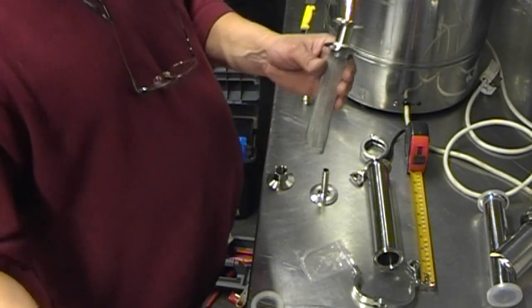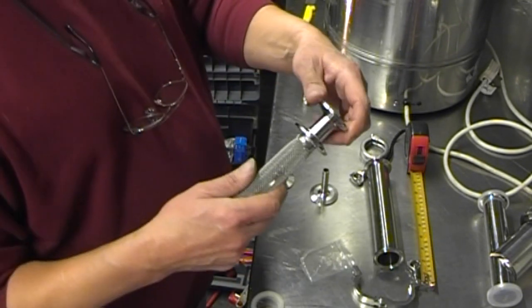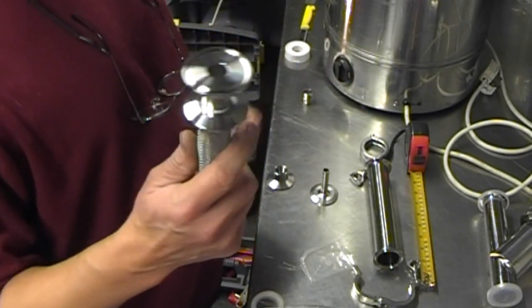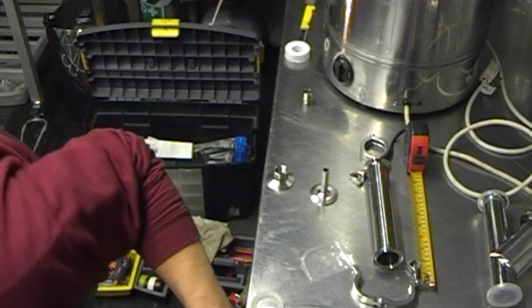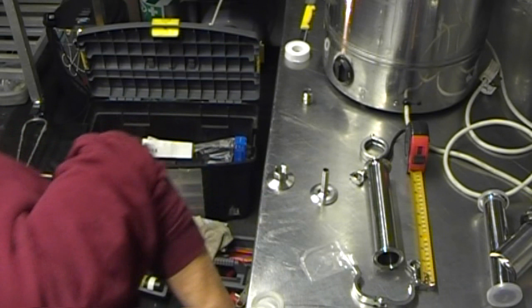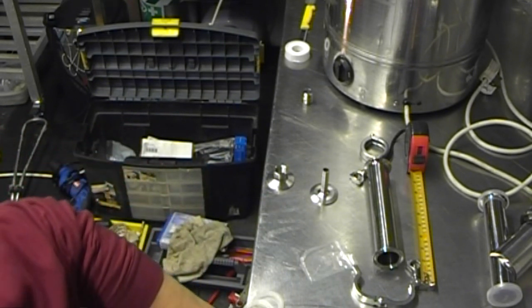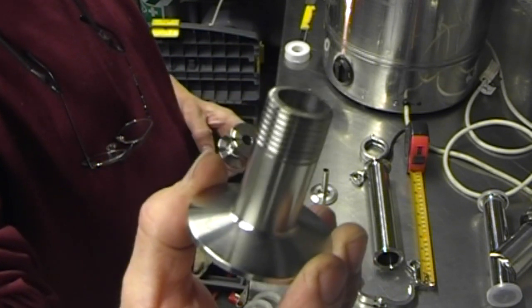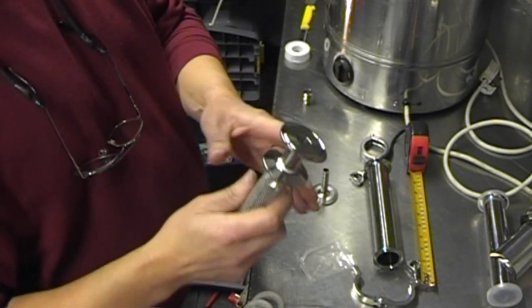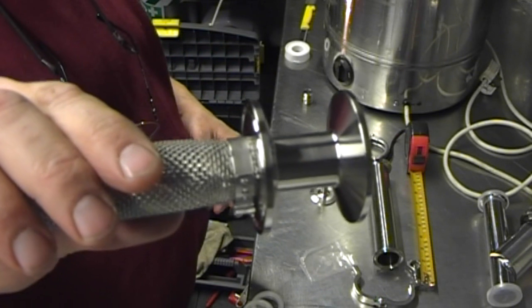What we've done is we've got a male threaded tri-clamp. So what we're looking at is one of those screwed right through the back of the blank.